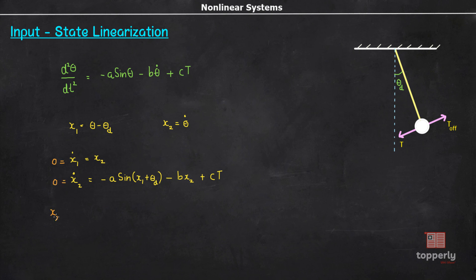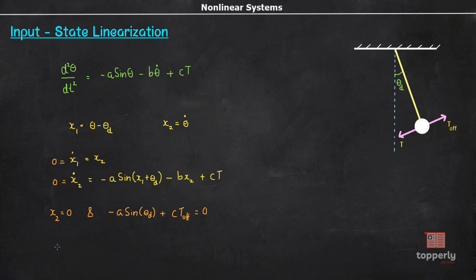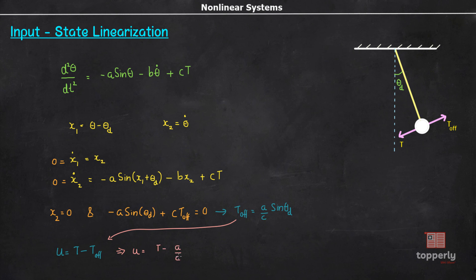Here τ_0 is the torque applied when θ = θ_d, that is at steady state. Now, τ_0 is the torque required at equilibrium, and τ is the torque on the pendulum at any instant. So, in order to bring the pendulum to equilibrium, we need to apply an input equal to τ - τ_0. We define the control variable u as u = τ - τ_offset. From this equation we can write τ_0 = (a/c) sin θ_d. Substituting gives us u = τ - (a/c) sin θ_d.